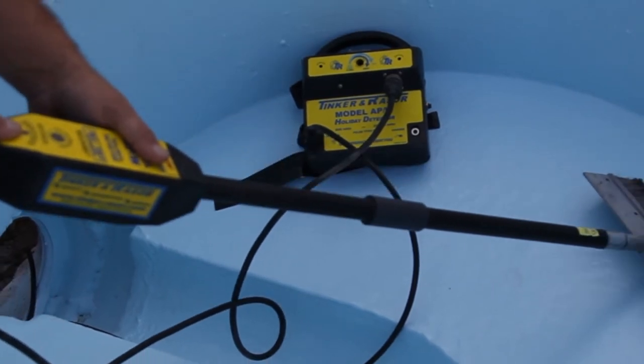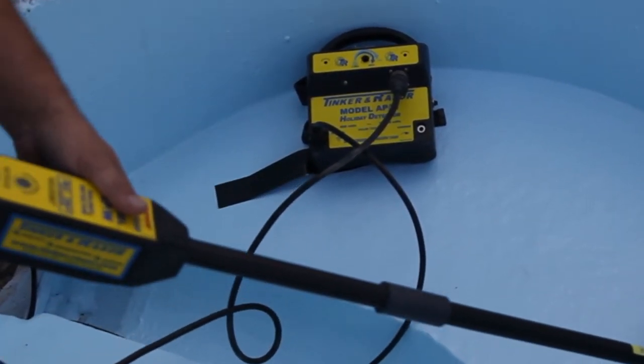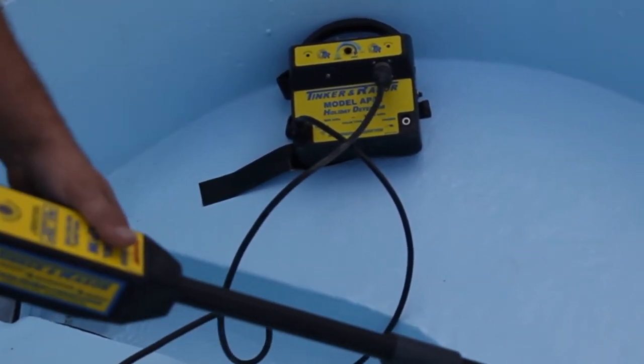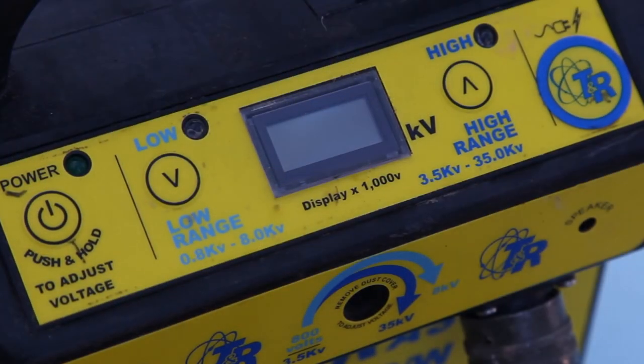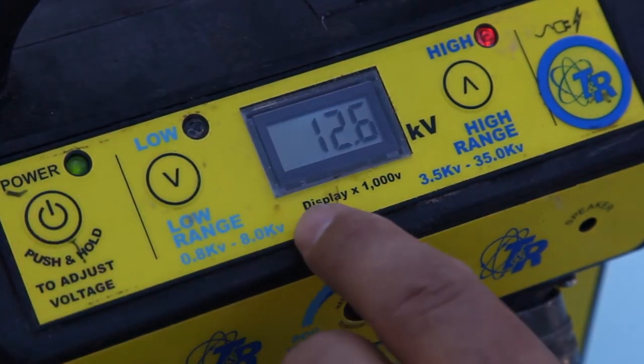The holiday tester voltage is set to 100 times the thickness of the coating. To test a coating thickness 125 mils, the holiday tester will be set to 12,500 volts.